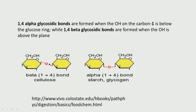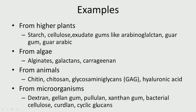So now you know how to name these linkages. From plants we have starch, cellulose, and gums like arabinogalactan, guar gum, and gum arabic. From algae we have alginates, galactans, and carrageenates. From animals we have chitin, chitosan, glucosamine, glycans, and hyaluronic acid. From microorganisms we have dextran, gellan gum, pullulan, xanthan gum, bacterial cellulose, curdlan, cyclic glucan, and linear glucan, among others.